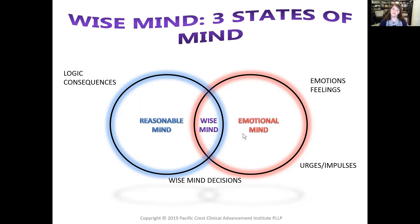Over here in your emotional mind, that's where you keep emotions and feelings. It's also where you have your urges and impulses. So if somebody walks down the hall and passes me and says, 'You look terrible today,' my emotions and feelings — I might feel sad, hurt, angry, or surprised. For urges or impulses, I might have the urge to run away, cry, yell at them, or maybe insult them back.